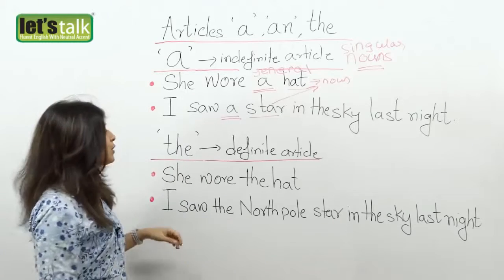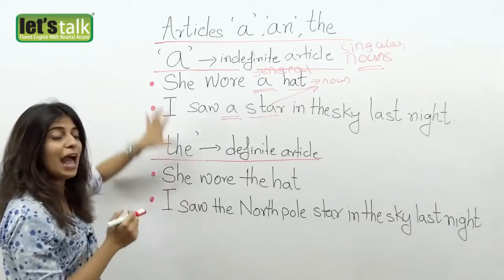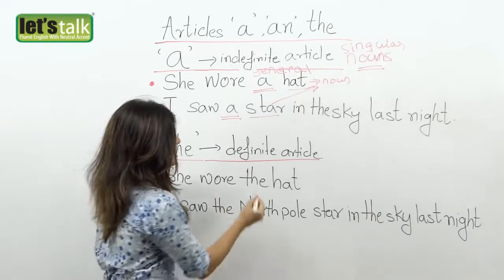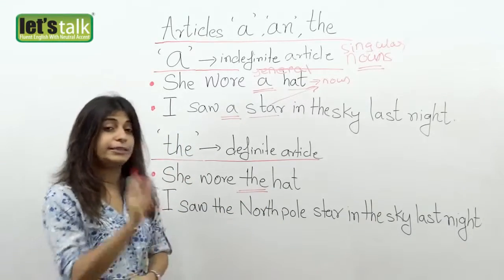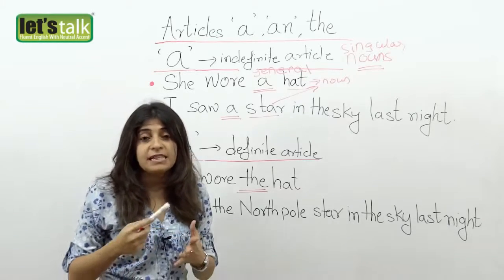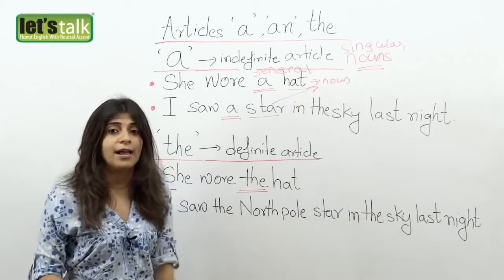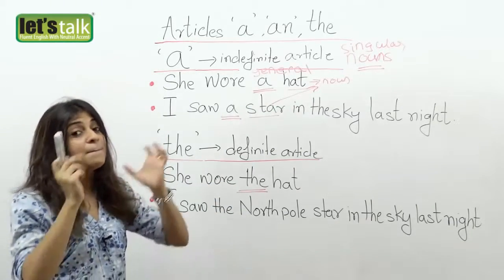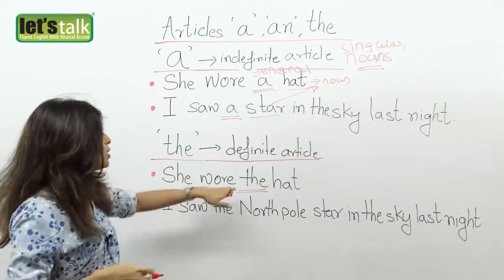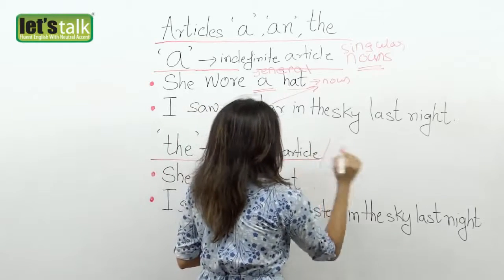Now we'll look at the article 'the.' When do we use 'the'? I have the same sentences here but with 'the': 'She wore the hat.' Here 'the' is your article, and basically it means you know what hat I am talking about. Maybe it's a hat we discussed last week that she finally bought, or a hat we were making fun of, or the pink hat she got last week. You know specifically which hat you're talking about. So 'the' acts as your definite article — something in particular, something specific.